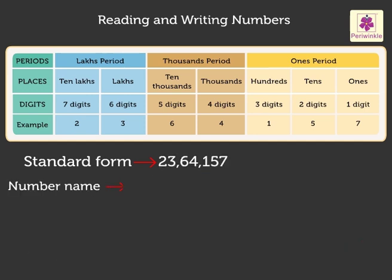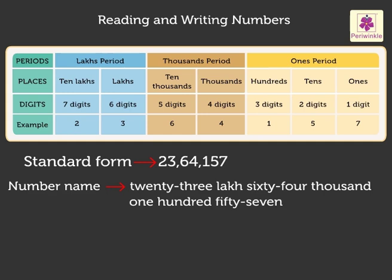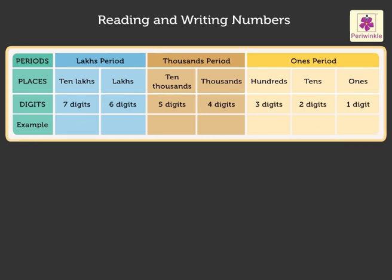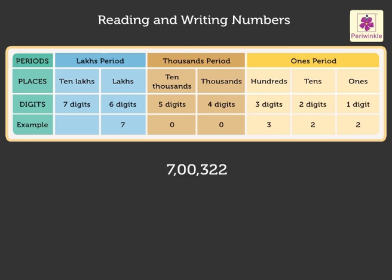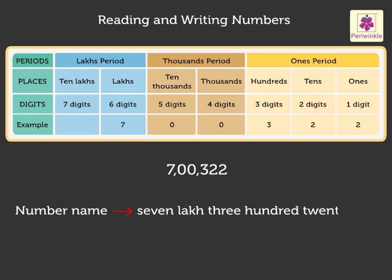Its number name is written like this. Let us try one more: 70,00,322. We read this number as 70,00,322. Did you notice? Here, we did not read the zeros, but we did write them to show the place value. Its number name is seventy lakh three hundred and twenty-two.